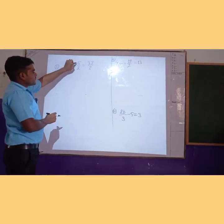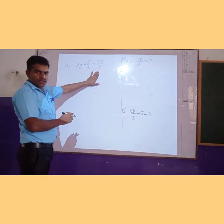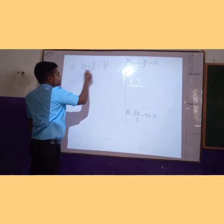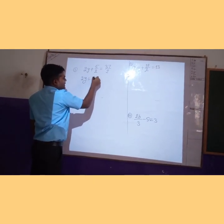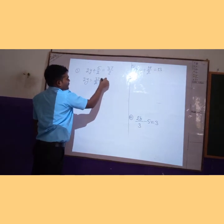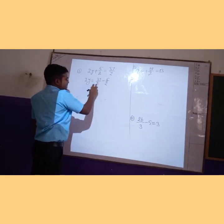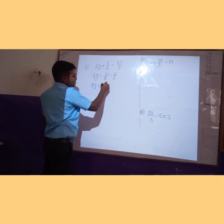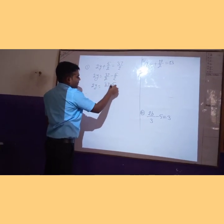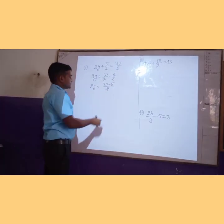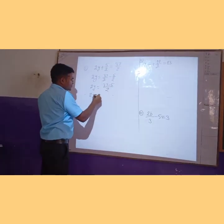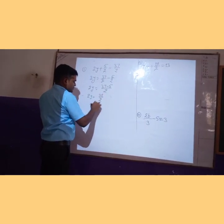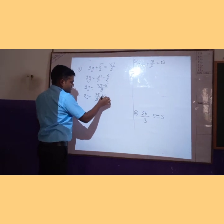Fourth problem: m plus 5 upon 2 is equal to 37 upon 2. We have to find the value of m. We will transpose 5 upon 2 from left to right. So we get 2m is equal to 37 upon 2 minus 5 upon 2. Since the denominators are the same, we subtract the numerators directly to get 37 minus 5 upon 2, which gives 32 upon 2, which equals 16.